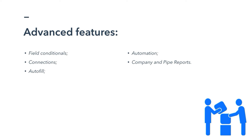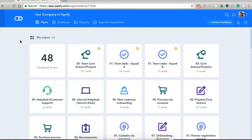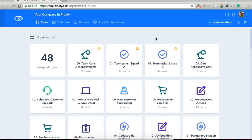With reports, we'll be able to keep track of how many projects are active — how many have active tasks, the total of projects of each type, how many tasks are currently being executed, the tasks segmented per team member or squad, etc. So these are our three pipes: team core actions projects, team tasks squad A, and team tasks squad B.